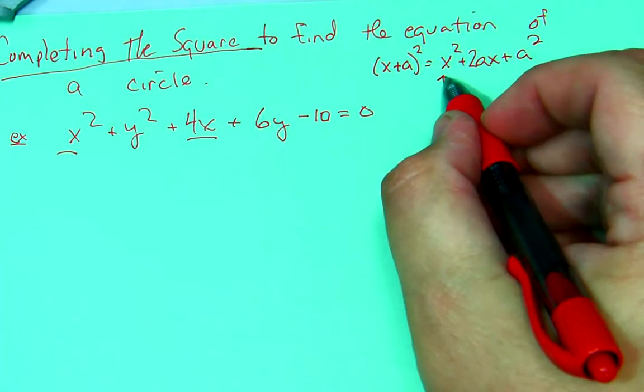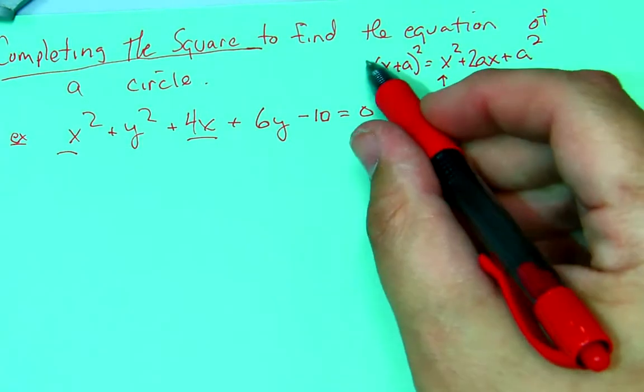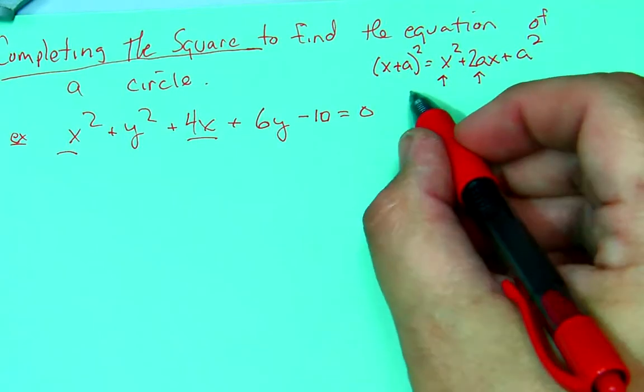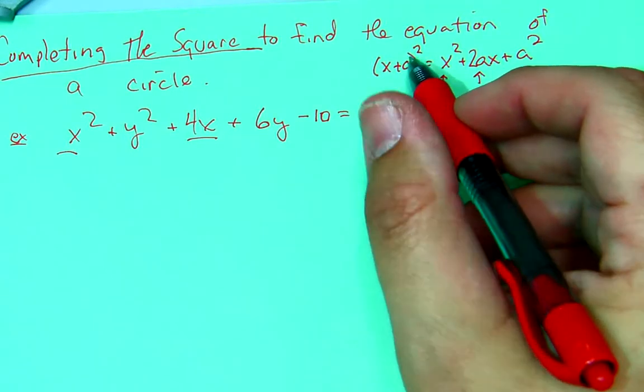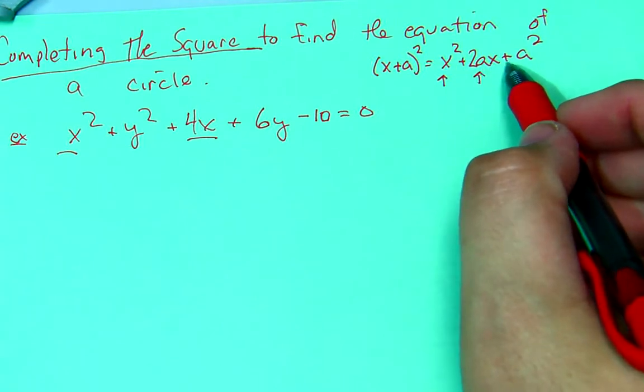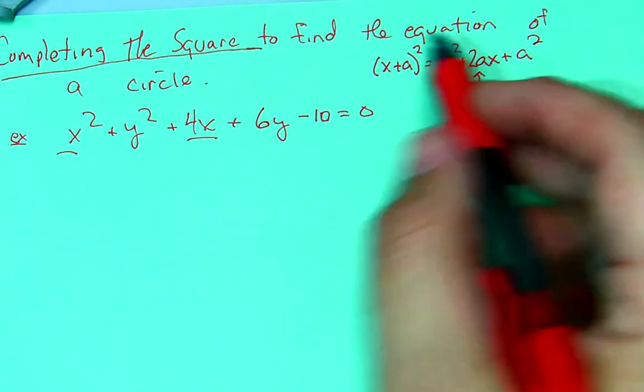Now, in these problems, we're going to be given these two values, the x squared and the 2ax. And if we're dealing with the y's, we're going to be dealing with y plus b quantity squared, where we get y squared plus 2by plus b squared.